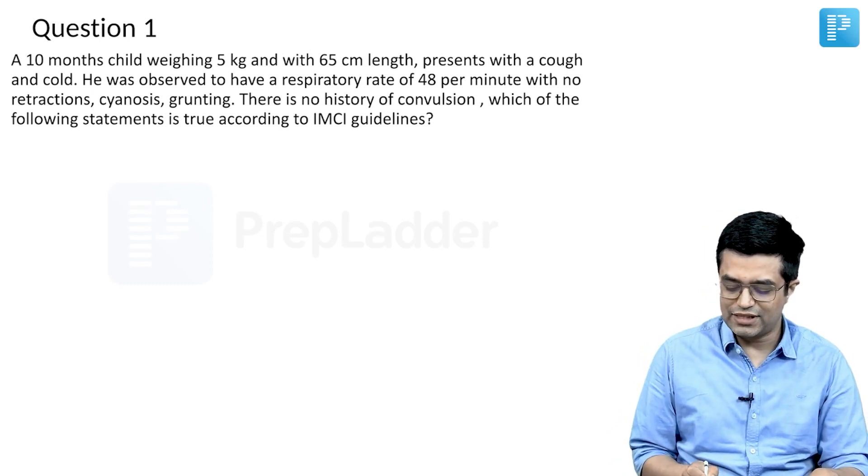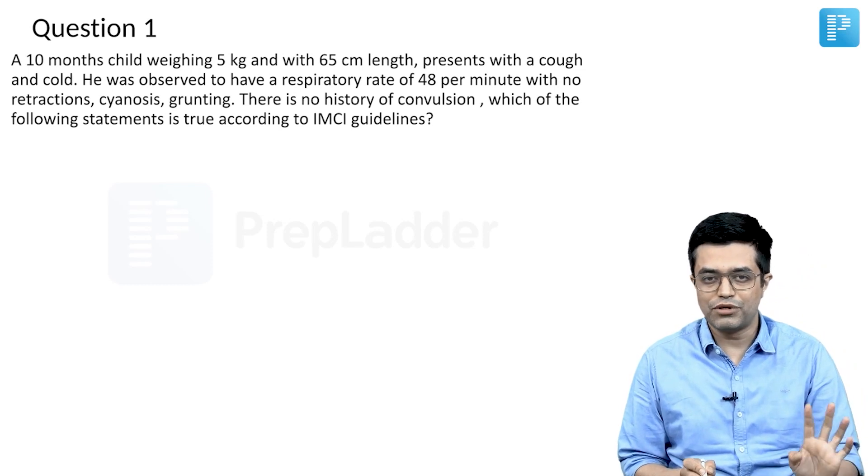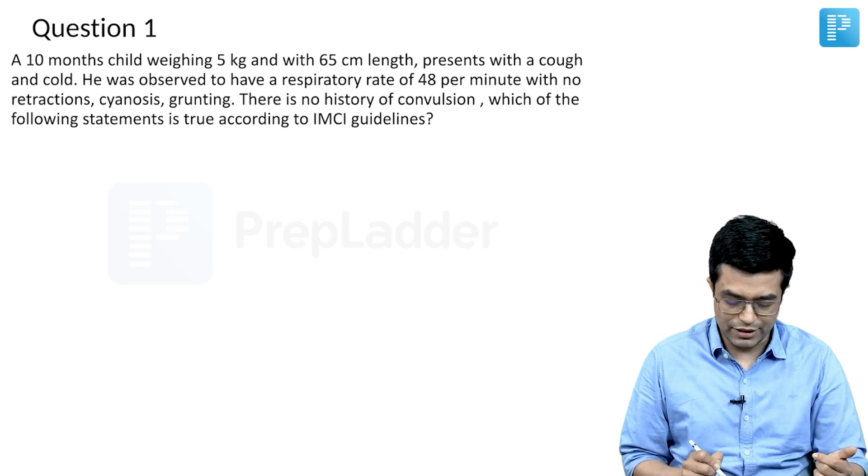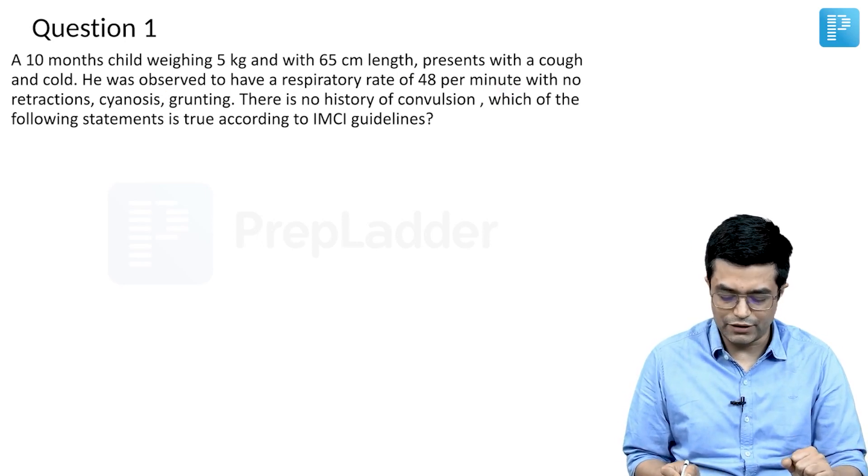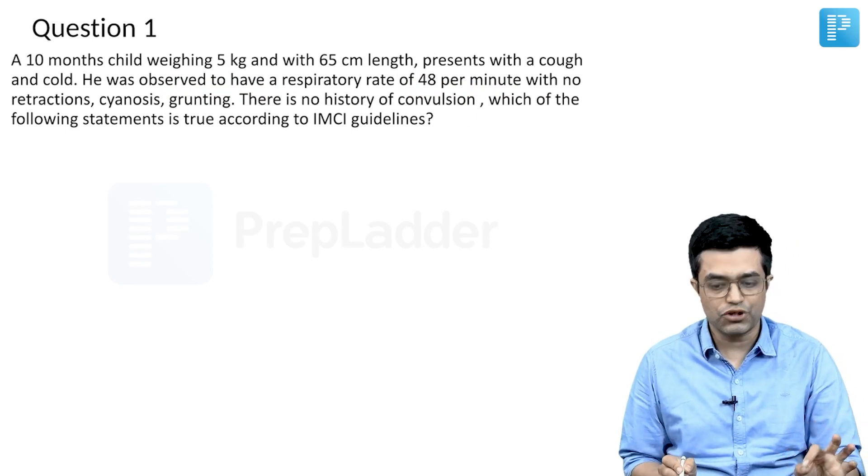A 10-month-old child weighing 5 kg and with 65 centimeter length, so it should be clear in your mind that there is no malnutrition in the child, presents with a cough and cold. There are respiratory symptoms. He was observed to have a respiratory rate of 48 per minute with no chest retraction, no cyanosis, no grunting, no history of convulsions.